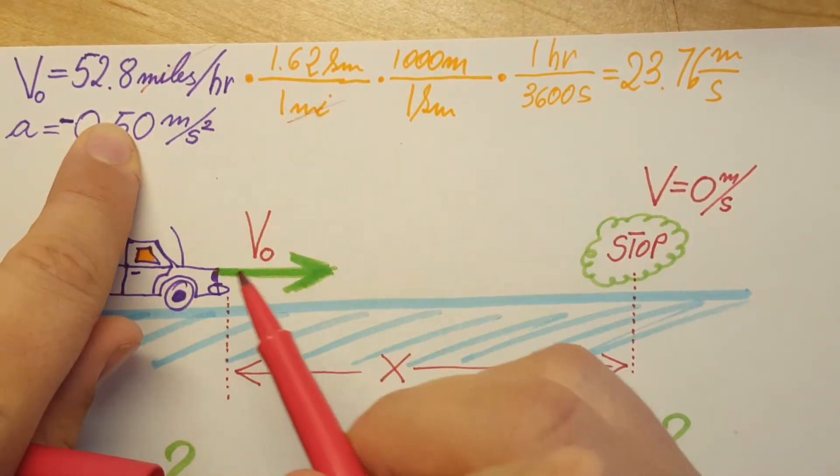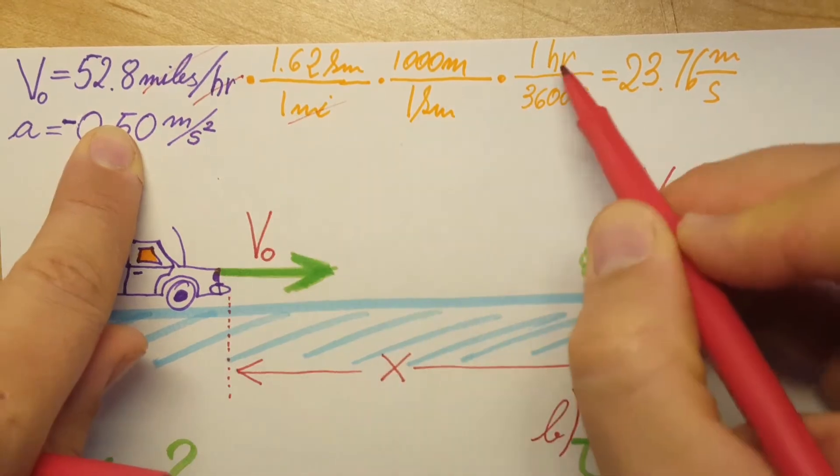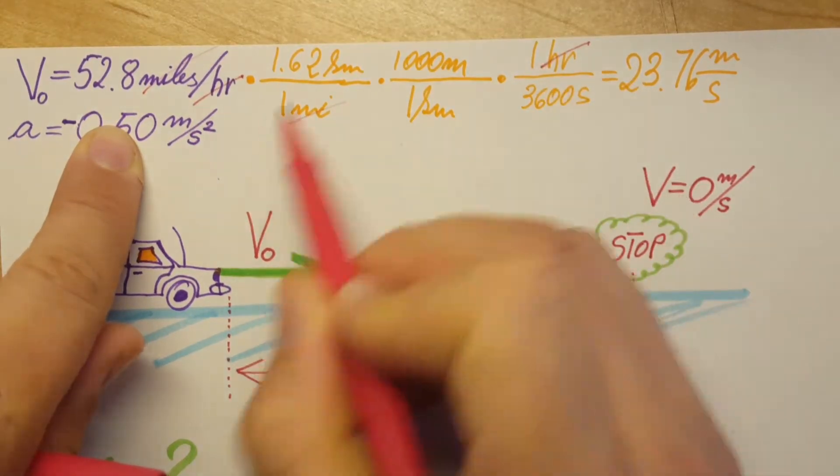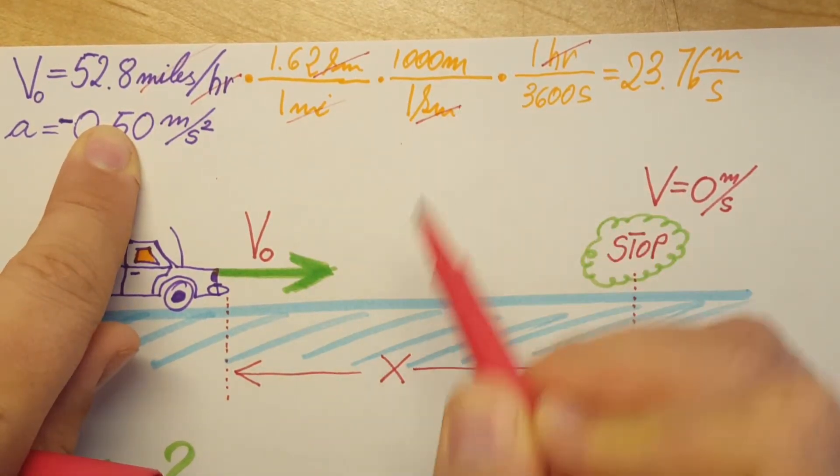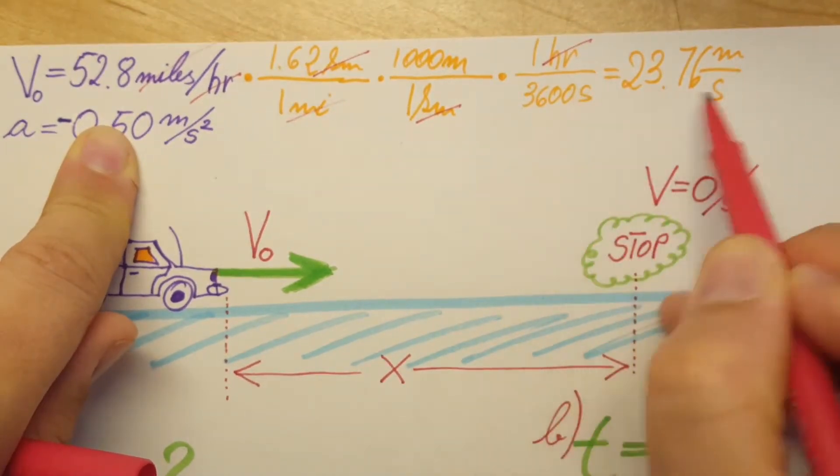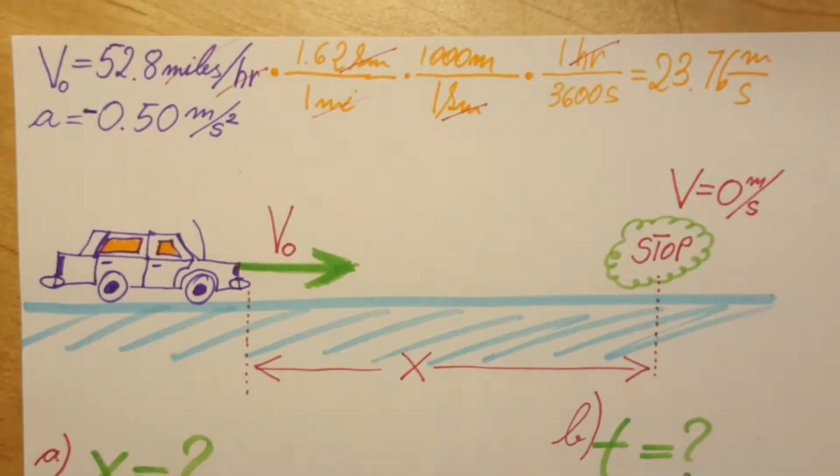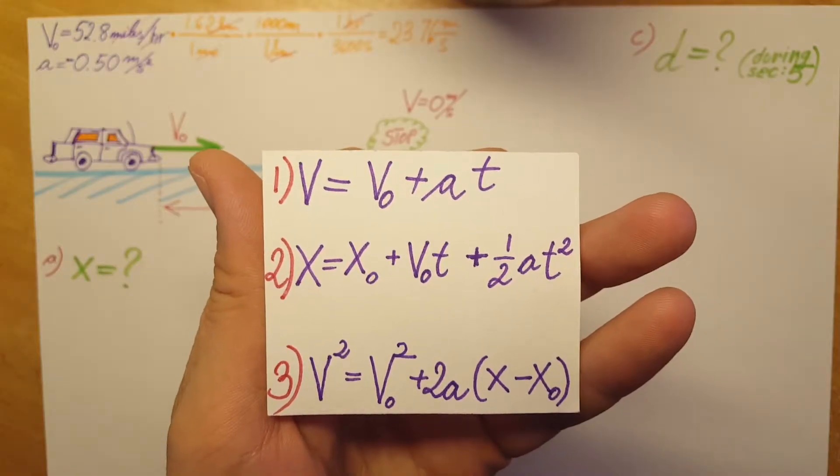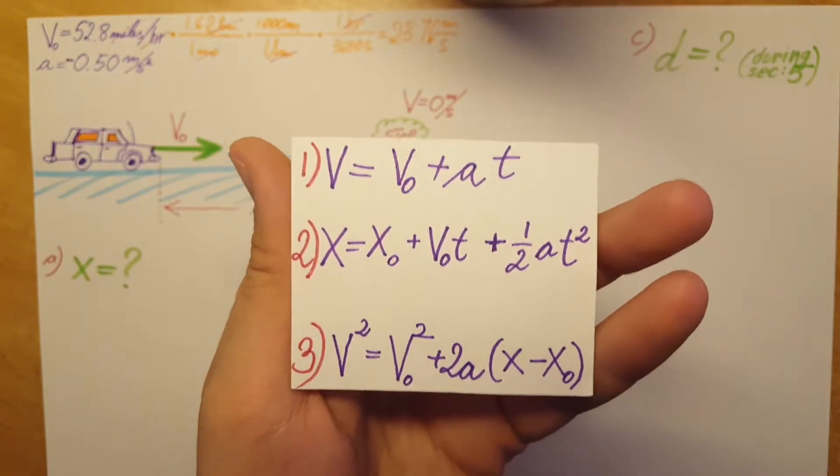The miles cancels with miles, the hour cancels with hour, kilometer with kilometer. The meters and seconds are in the right places. Good. Here we have our kinematics formulas.